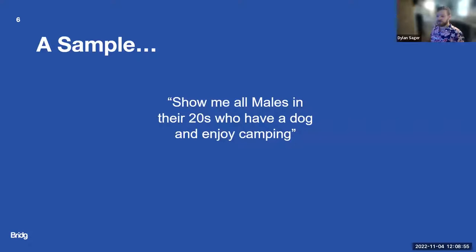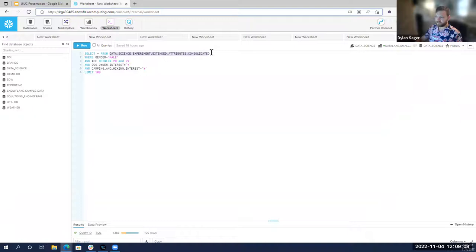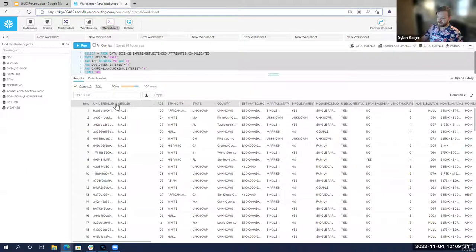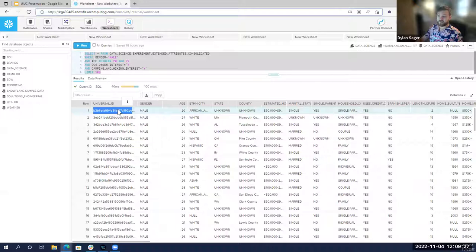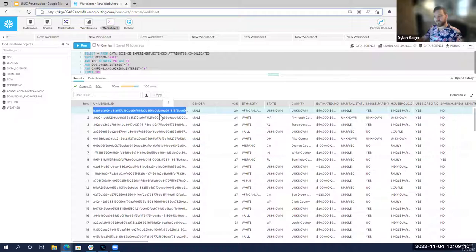I'll show a sample of our data. You can do things in Bridge, like show me all males in their twenties who have a dog and enjoy camping. If you go into our data lake, you'll see I have this curated data. Gender equal to male, age between 20 and 29, dog owner, and also has interest in camping and hiking. If I run that, you'll see this is what you would see in Bridge. You can see this anonymized ID, we're privacy safe.